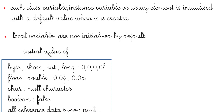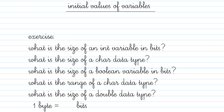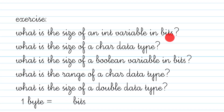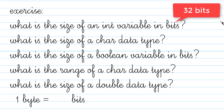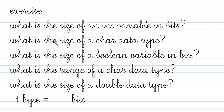Let's do a quick exercise. First question: what is the size of an int variable in bits? Remember, the question asks in bits, not bytes. Int has 4 bytes in memory, and since one byte equals 8 bits, the answer is 4 × 8 = 32 bits. Be careful not to write '32 bytes' or '8 bits' — a common mistake.